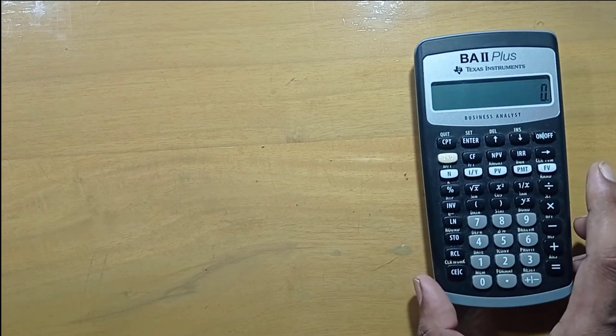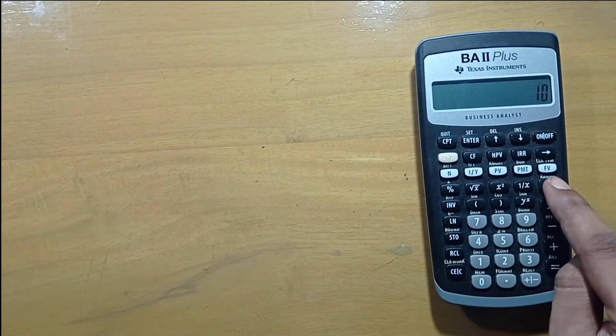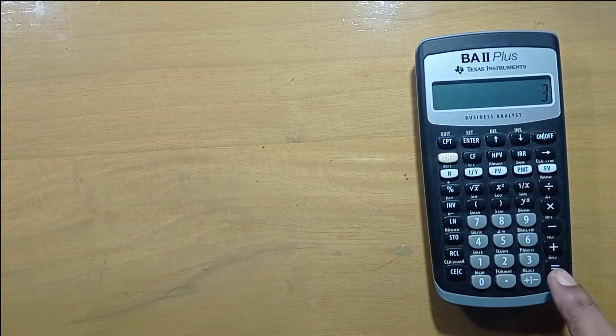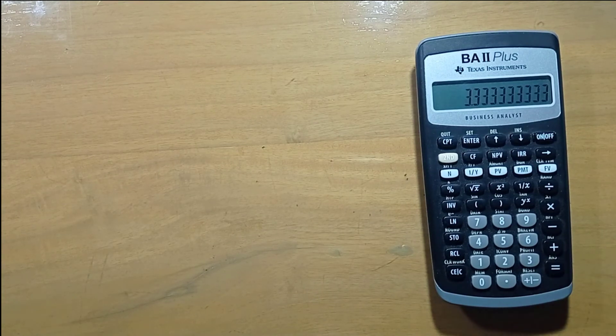Now if we divide 10 by 3, it will show up to nine digits after decimal point. I think floating decimal setting is very helpful in calculation.